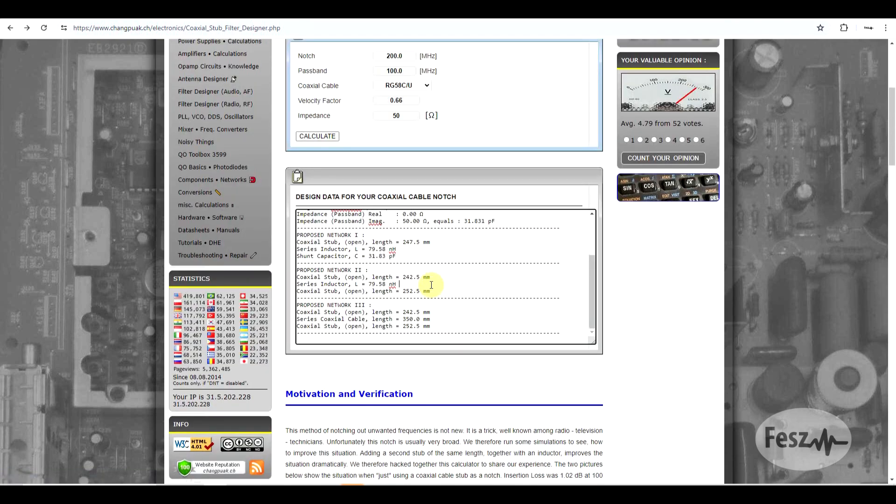Now the nice feature about this tool is that it doesn't just add a quarter wavelength line, but it also uses either discrete components or extra pieces of coax as impedance matching elements. So even though this is not a universal tool, it will not cover all use cases, it does put forward one of the issues of such a filter. So I do recommend that you check this tool out, since it might come in handy.